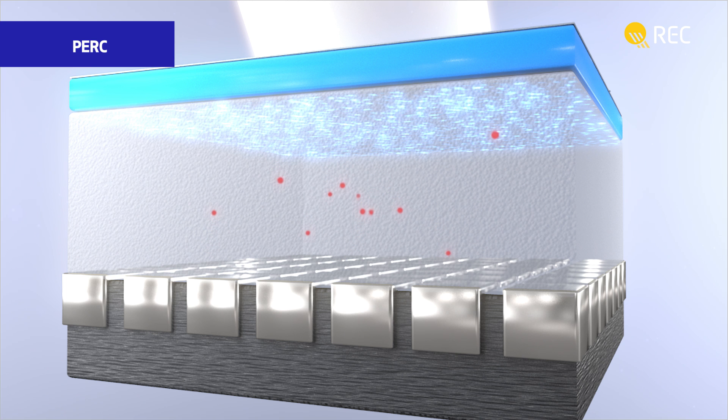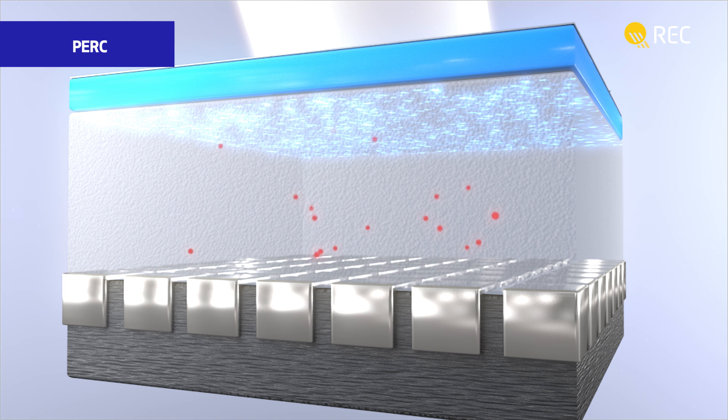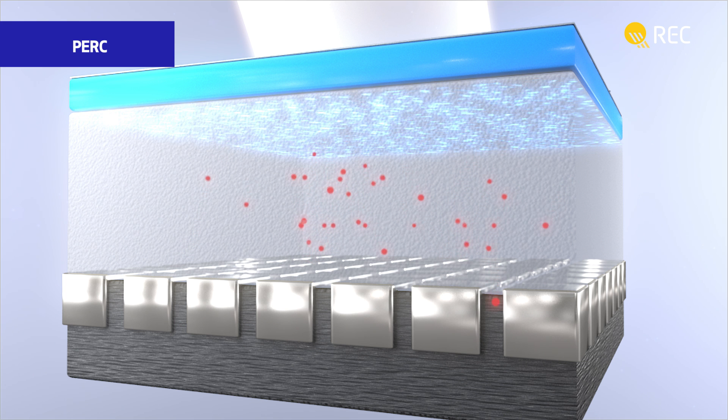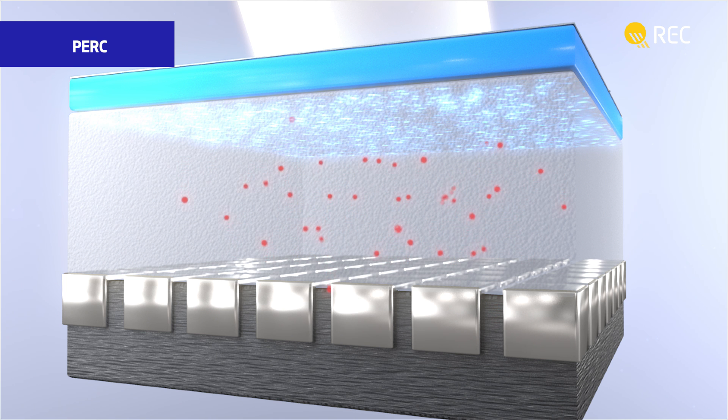Heat in the cell is caused by the recombination of electrons at the rear. PERC works like a shield between the base layer and the rear contact, essentially bouncing electrons back into the cell, stopping the recombination and helping produce more energy.